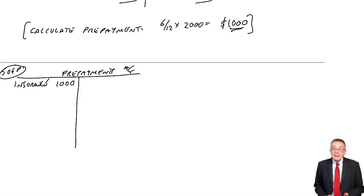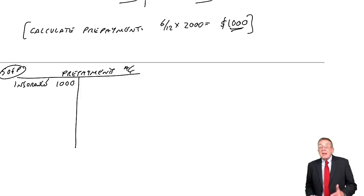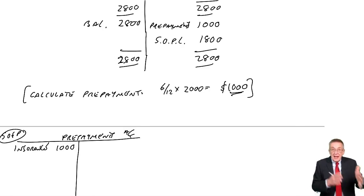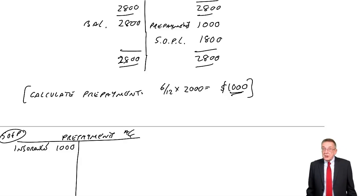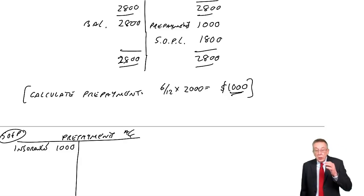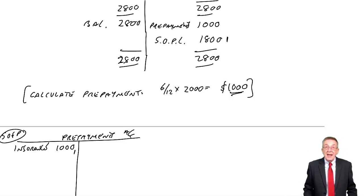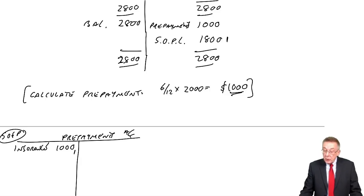Bear in mind: you cannot be asked to write up T-accounts in this exam. They could just test that you know what the entries are — debit this account, credit this account. Most questions will want to know what is the expense and what is the overpayment, and you don't need T-accounts to work that out.